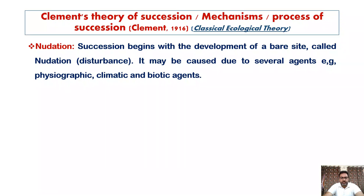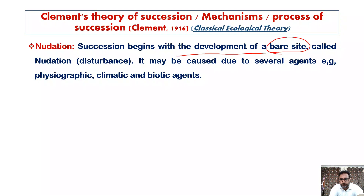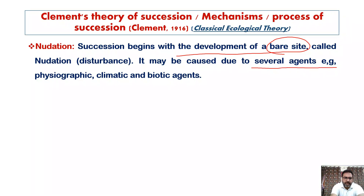In ecological succession, it starts with nudation. The succession begins with the development of a bare site — a site which was not having any kind of vegetation before. That is why we call it nudation. It can be an area which was not having any vegetation earlier, or because of disturbance it lost its vegetation and is now in the process of ecological succession.